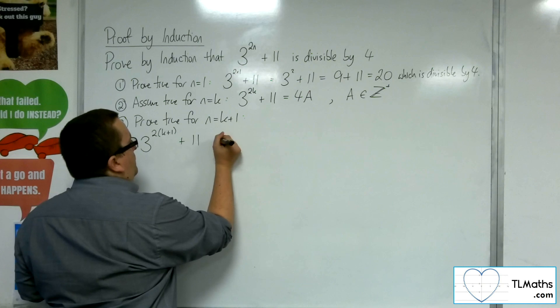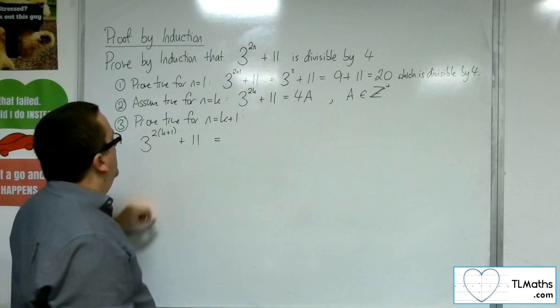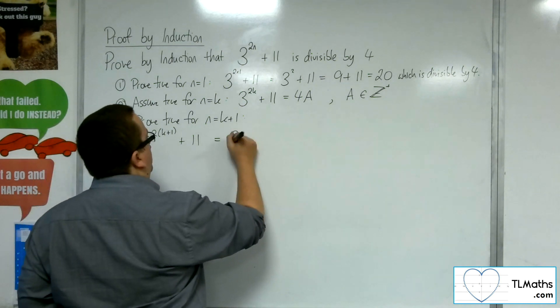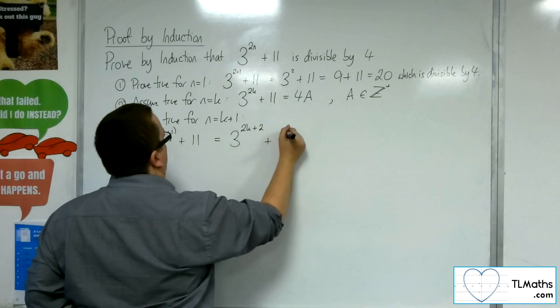So what have we got then? Well, with this here, we've got this 2k plus 1. So I'm going to write that as 3 to the 2k plus 2.